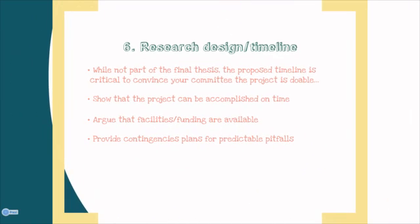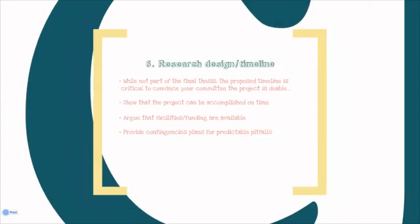The sixth element one would expect in a proposal is the research design timeline. While this part — unlike the other five elements we've discussed — will not end up in your final thesis document, it's critical that you provide a timeline to convince your committee that the project is doable, that you can in fact accomplish the project on time, that you have the facilities, the funding, the ability, and the permission necessary to get that project completed. Also in your research design timeline, you'll provide contingency plans for predictable pitfalls that might occur during the research process.